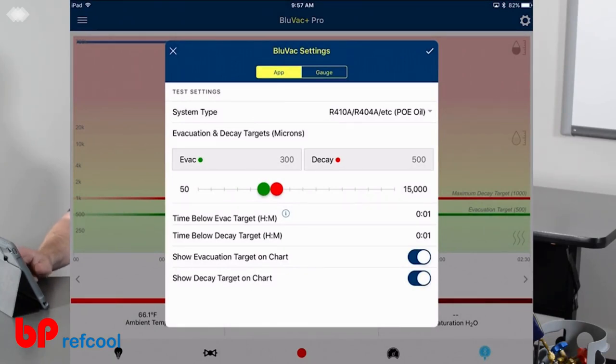VAC target is 300. We allow it to decay up to 500. If I go back to mineral oil, it's going to have a target now of 500, a decay of a thousand.